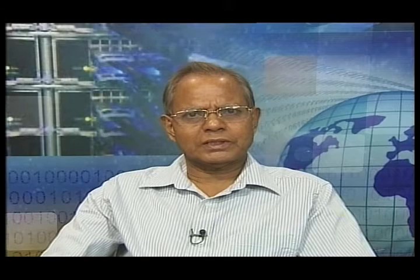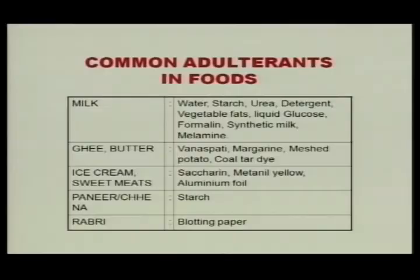Another adulterant is starch — it is added after dilution of milk with water to make milk thick. Urea is also added to increase the protein level so that the reading is made up. Detergent is also added in milk to make it foamy. Vegetable fat is added to make up the fat loss due to addition of water. Liquid glucose is also added for consistency of milk. Formalin is added for preservation of milk to increase the shelf life.